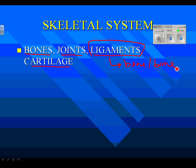Ligaments are technically connective tissue, and so is cartilage. A bone is an organ, and we'll talk about why — even though it's made of bone tissue, the whole bone itself is an organ. And then of course joints, where two bones come together.